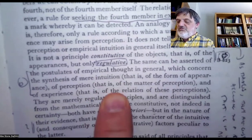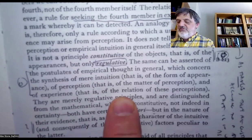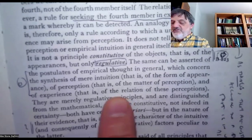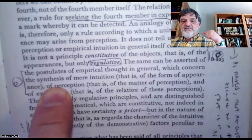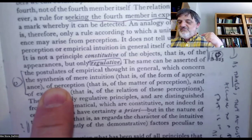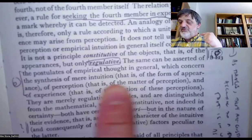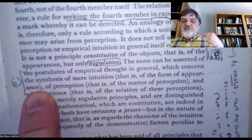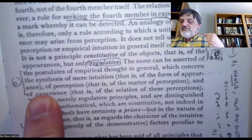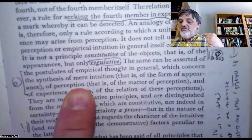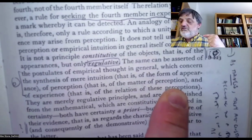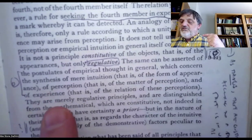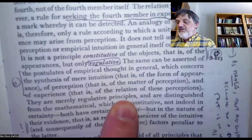That's a list of the three postulates of empirical thought in general, but it's also clearly a list of the three parts of the system of principles that came before. The synthesis of mere intuition corresponds to the axioms of intuition, which concern the form of appearance — the merely formal properties of the objects of experience. Perception corresponds to the anticipations of perception — the matter of perception. And experience corresponds to the analogies of experience — the relation of these perceptions.